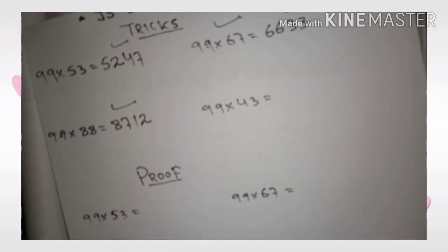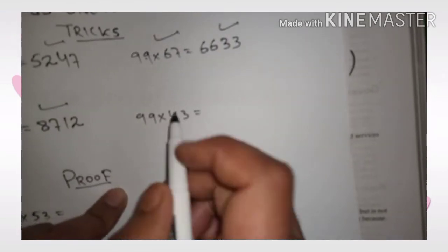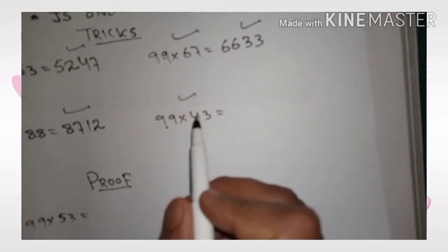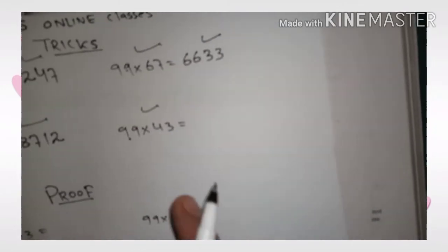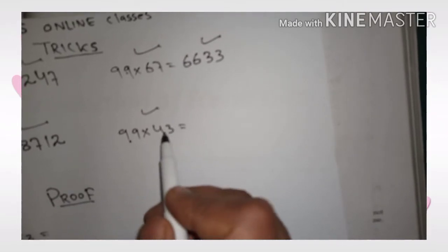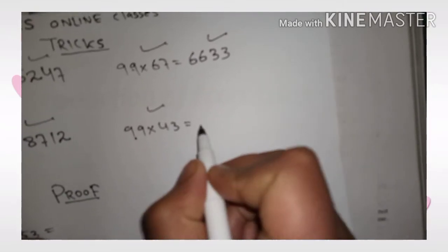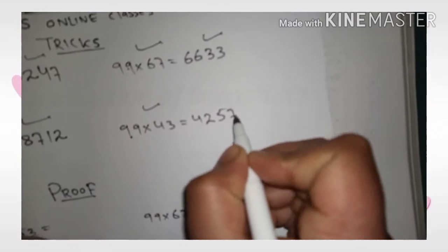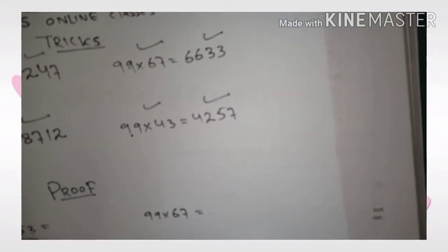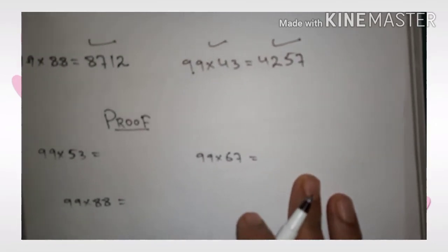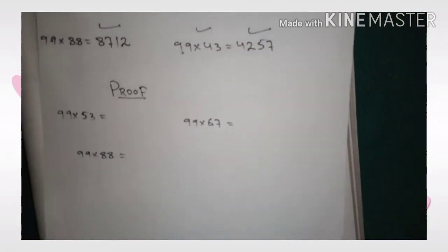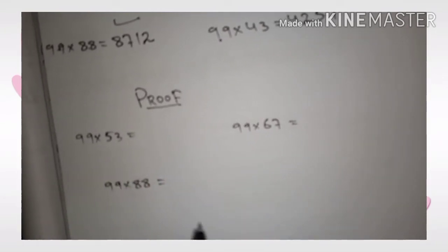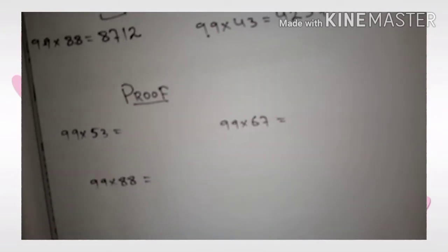So its answer will be 8712. Yes, it is the answer. You can check on your calculator. Again, last example: 99 into 43. When you multiply 99 with 43, you get 4257. Now let me prove to you how we multiply a number with 99 and get the answer in seconds.